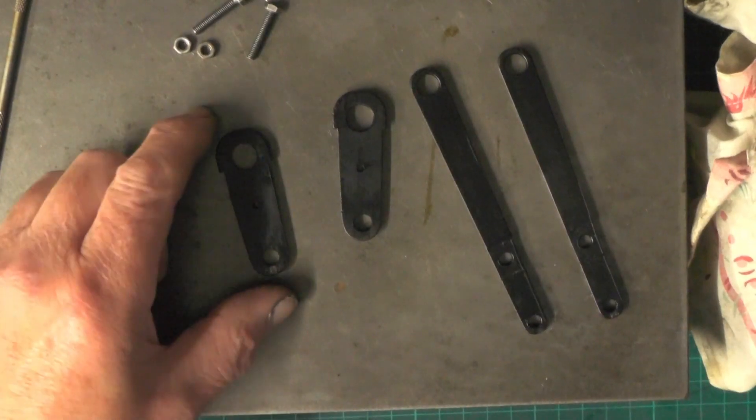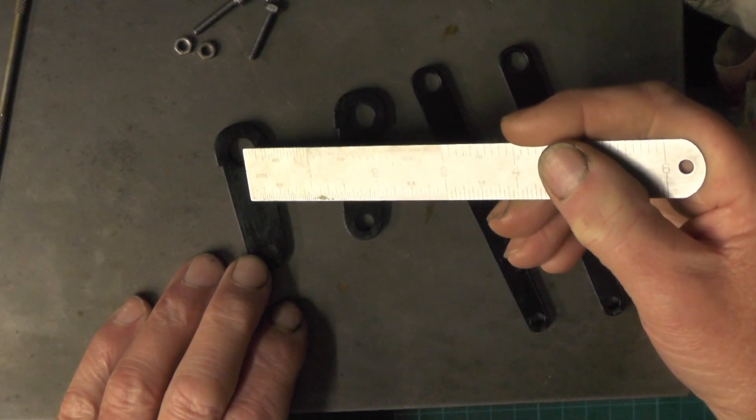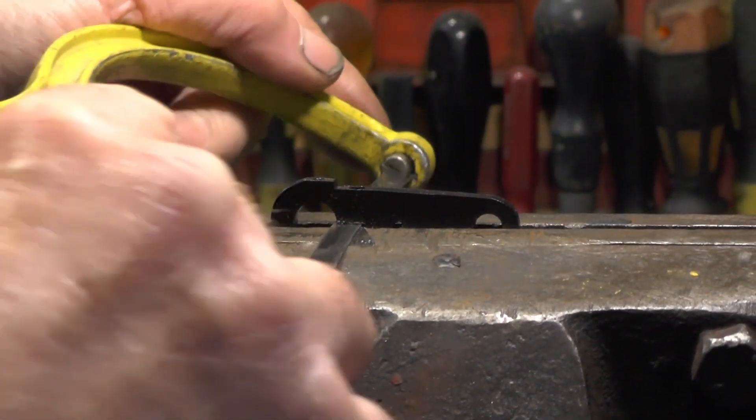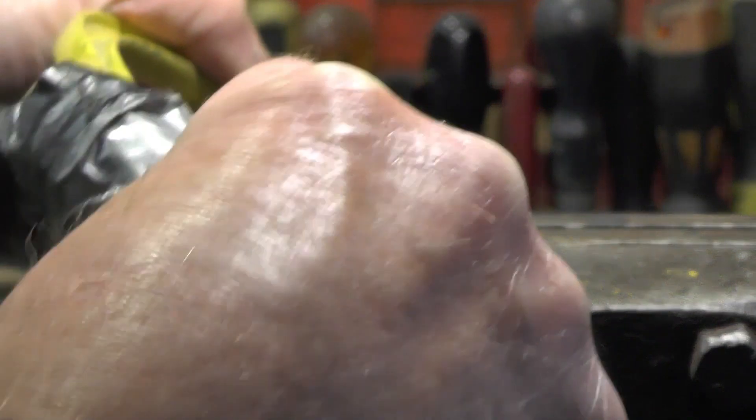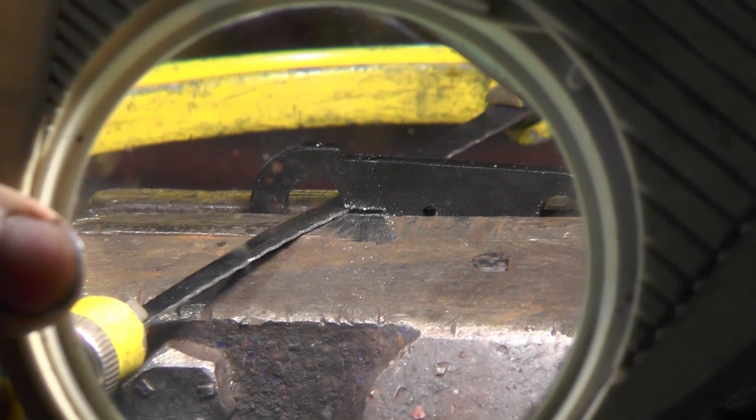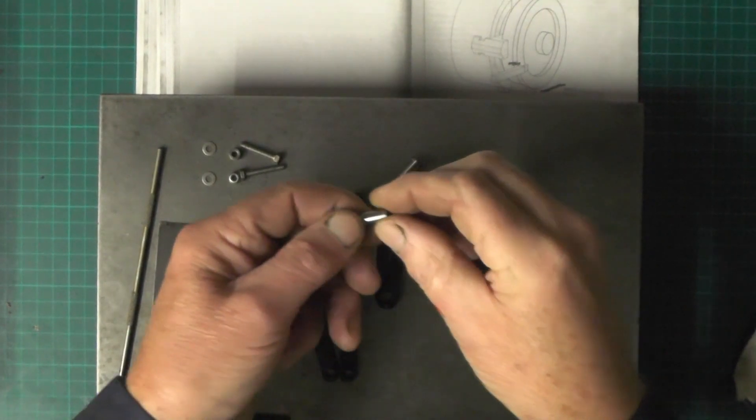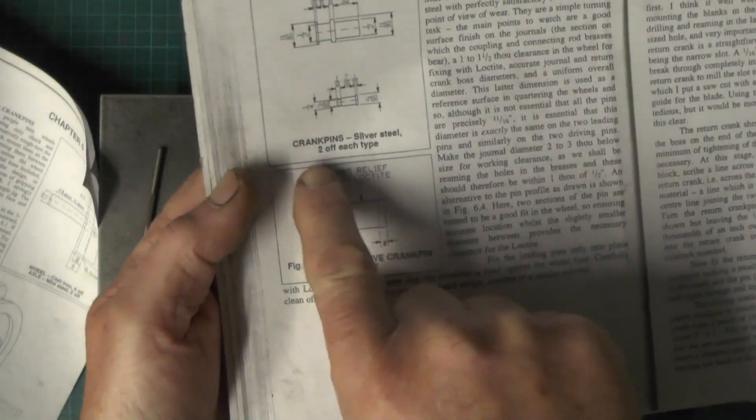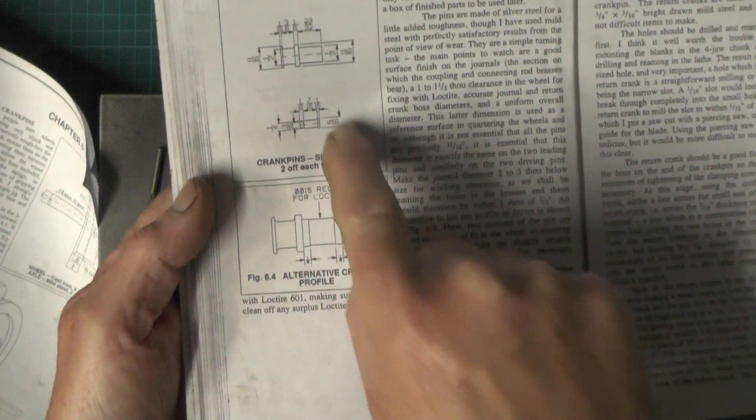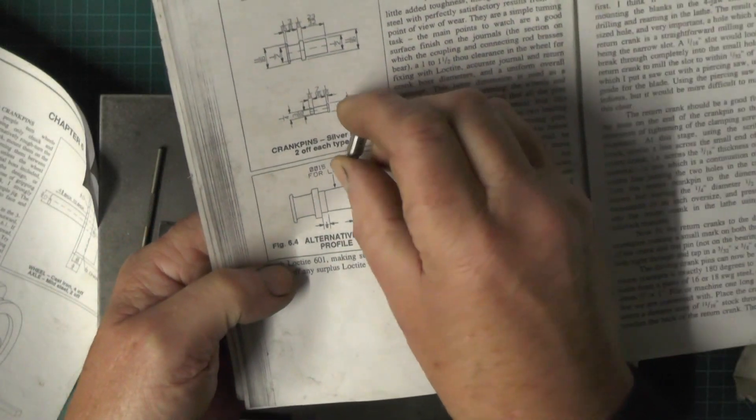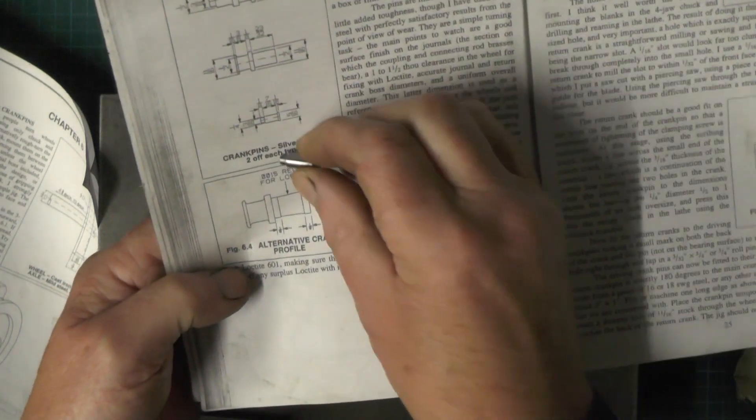Just getting carried away with myself there, I forgot to put this slot in to join that small hole for the clamp. Also, just off camera then, I've made these pins to this drawing, two crank pins, straightforward turning. It tells you to make them out of silver steel, but I've just used high tensile material, which is what I did on my Maid and they've been satisfactory.